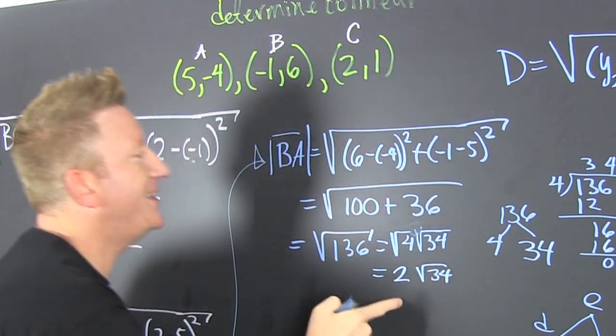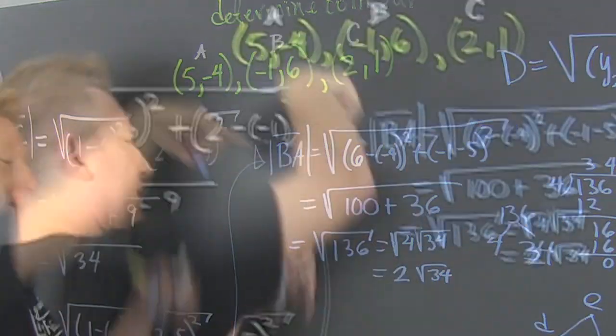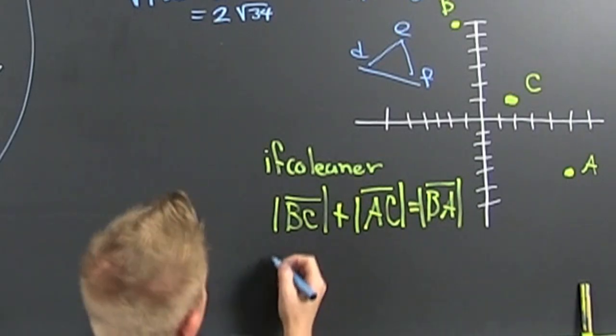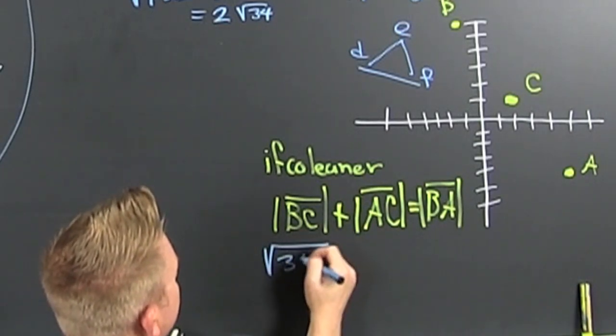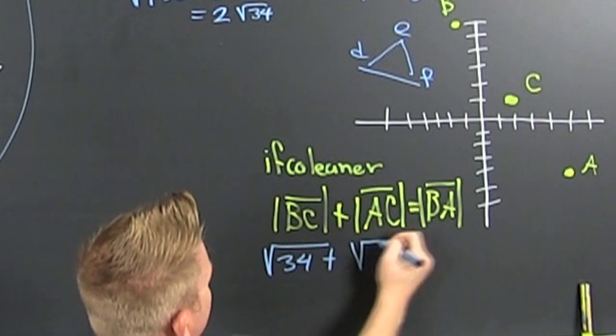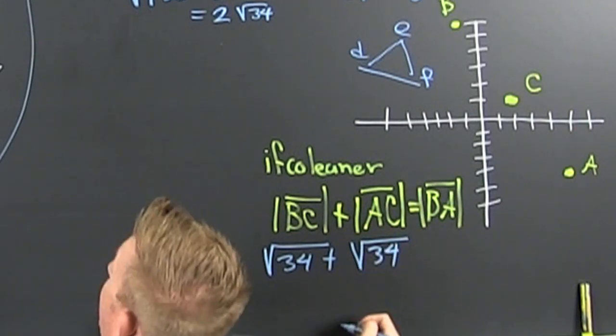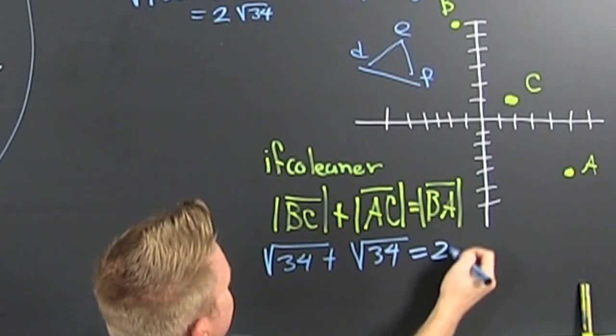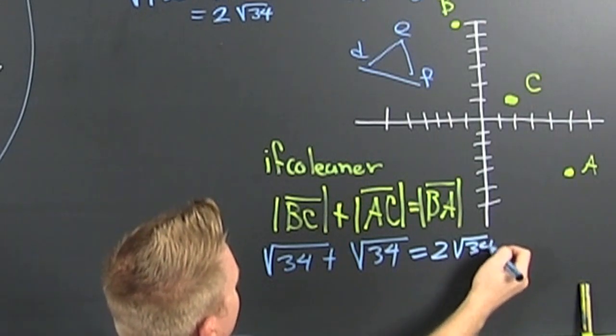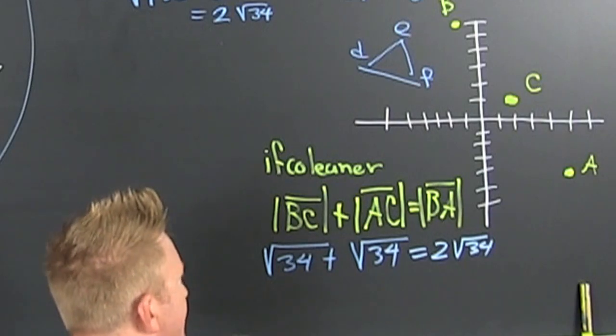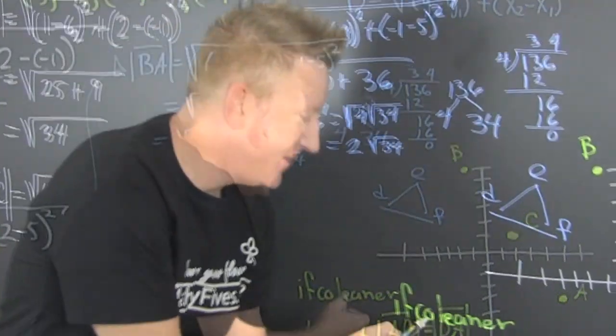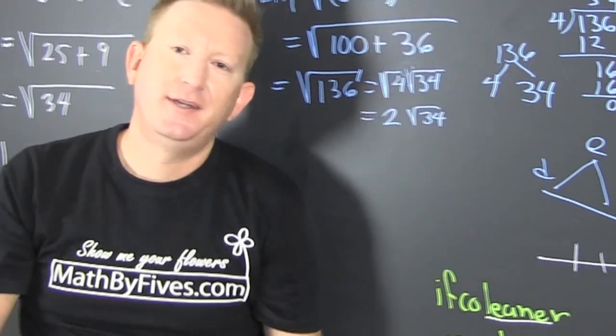So what is that? BC, that was the square root of 34, plus the square root of 34, that was AC, and then BA, that's two root 34. Is that true? Looks like they are collinear.